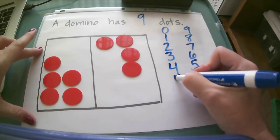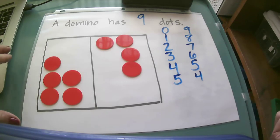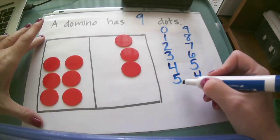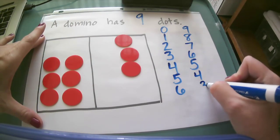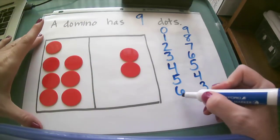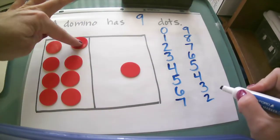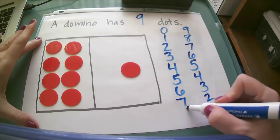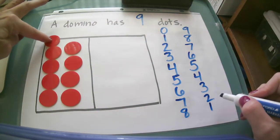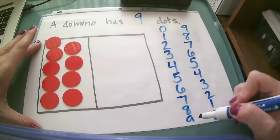Now I have five on one side and four on the other. I have six and three, seven and two, eight and one, and now I have nine and zero.